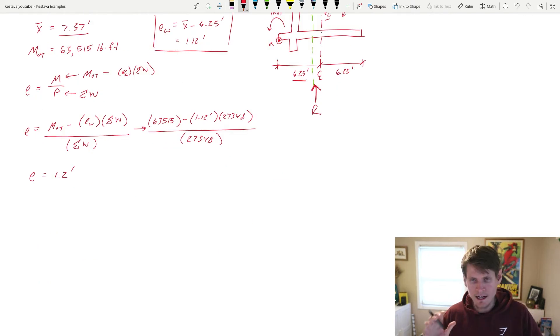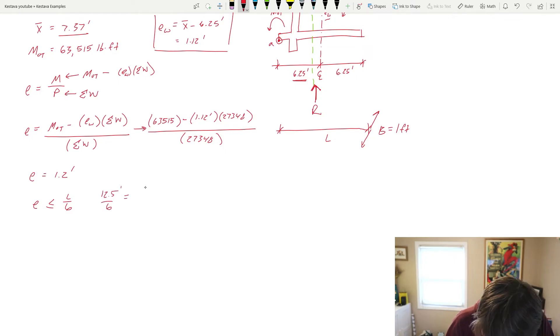Next, we need to determine what kind of equations we're using to solve our bearing pressure. For that, we need to know if E is less than or equal to L over 6, and that will determine which category of equations we're going to use. L is the length of your base in this direction, and then the thickness in and out of the page is B, which today we did a one foot strip. So L over 6 is equal to 12.5 over 6, which gets you 2.08 feet, which is greater than E.